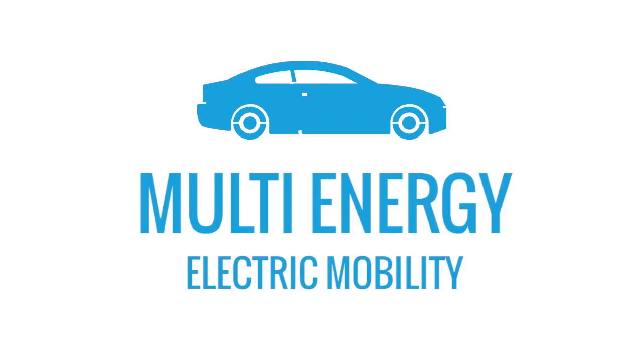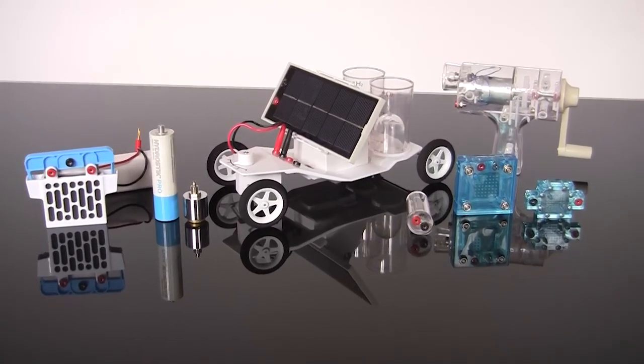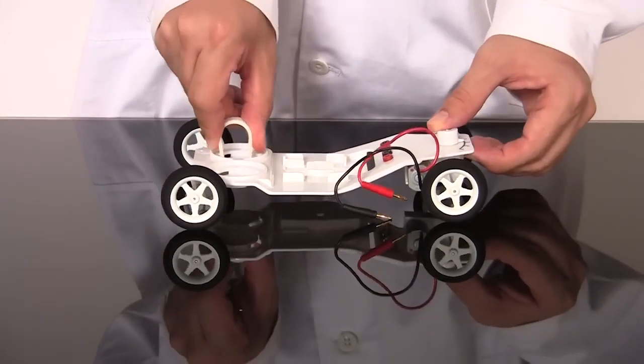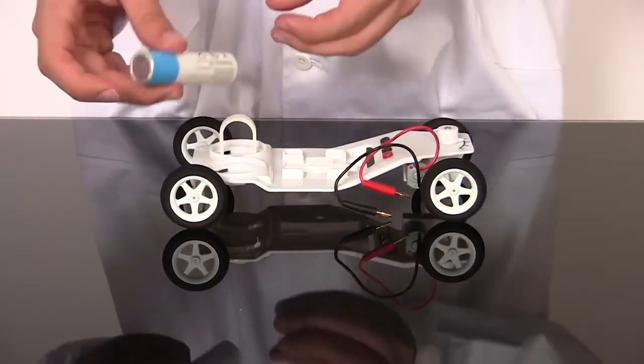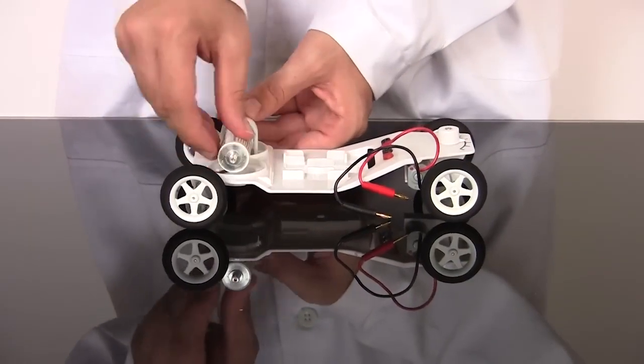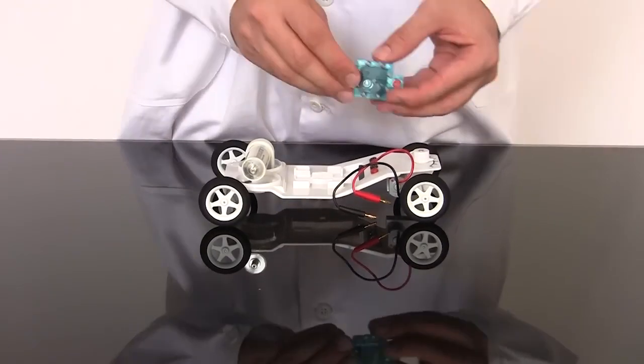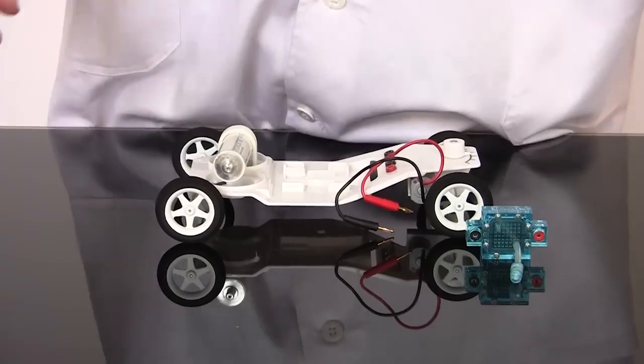Your students can examine many different renewable energy technologies at once with the electric mobility assembly. The car body is designed to allow different components to attach securely while providing power. For example, a simple clamp allows the hydrostick to mount onto the rear of the car.